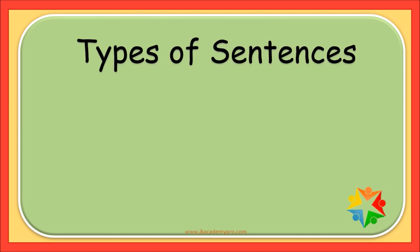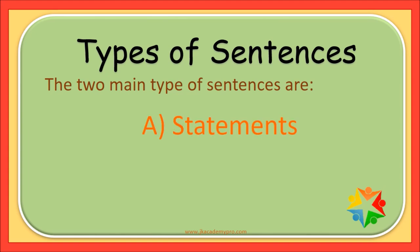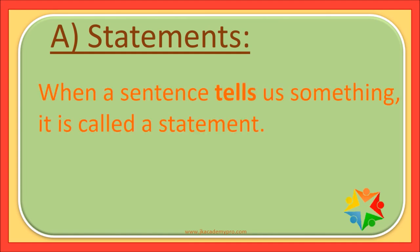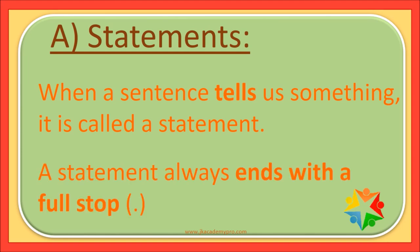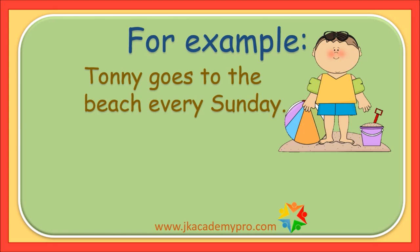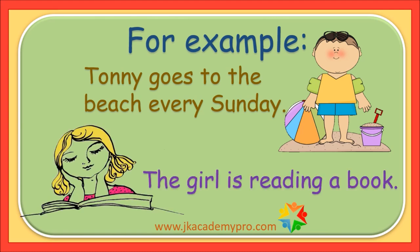Let's learn the types of sentences. Today we are going to learn the two main types of sentences: statements and questions. When a sentence tells us something, it is called a statement. A statement always ends with a full stop. For example: 'Tony goes to the beach every Sunday.' 'The girl is reading a book.' Both these sentences end with a full stop and are merely stating some fact. Therefore, these are statements.